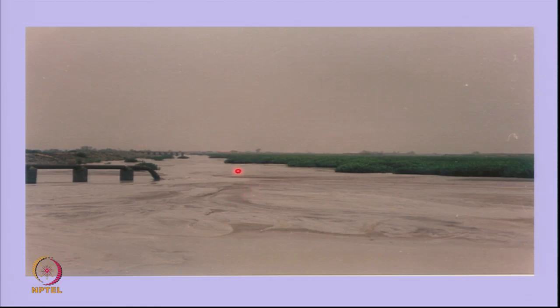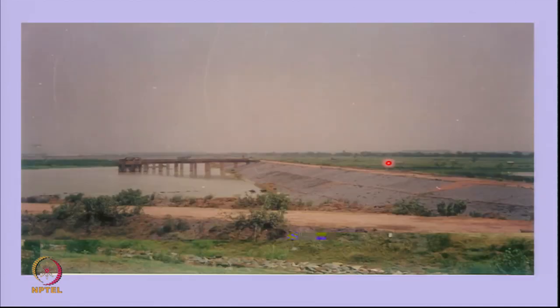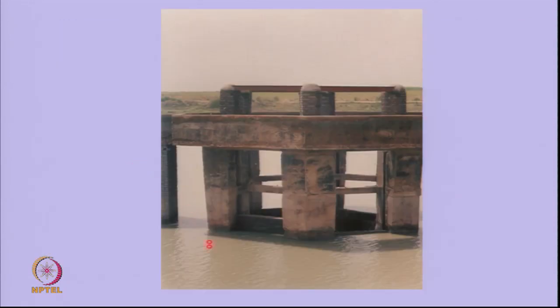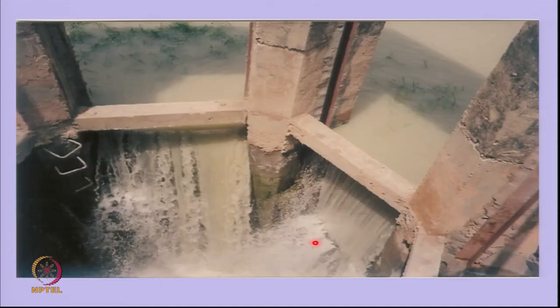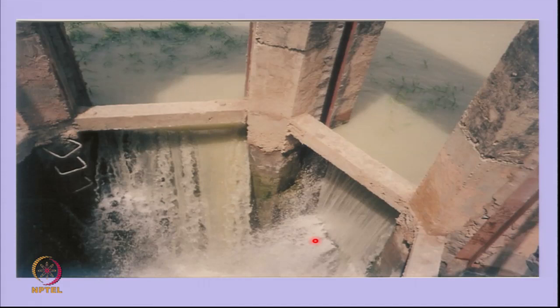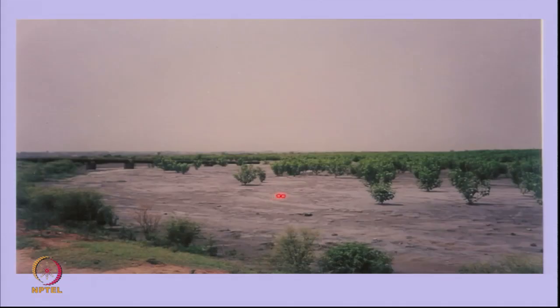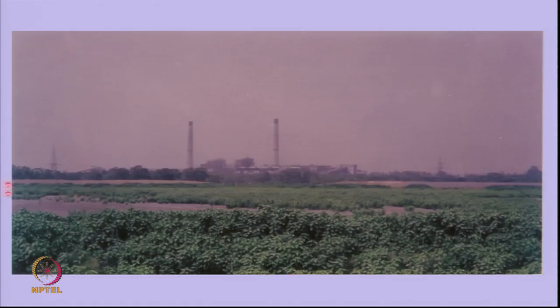Yet another ash pond at Delhi — the Badapur ash pond — shows the slurry inflow. They are growing greenery on it so that ash does not fly, and there is an embankment with a water decanting structure. Very fine particles of ash take about 12 hours or more to settle, so if retention time is not 12 hours the fines will go out. The discharge limit to rivers is about 50 ppm, so we have to meet that norm.